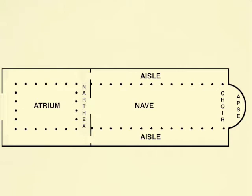A typical early Christian basilica plan is rectangular. It consists of nave, aisles, apse, choir, narthex and atrium. The nave is in the centre — it is the widest and tallest part. It is flanked by one or two aisles. Nave and aisles are separated by columns, indicated in this plan by dots.